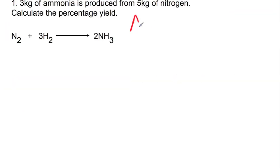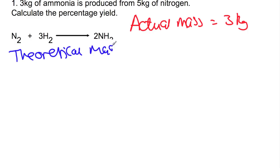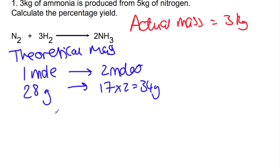In this first example, the actual mass of ammonia that is produced is 3 kilograms. We now need to look at the theoretical mass that should have been produced, had the reaction been 100% successful. We start with the mole ratio, so one mole of nitrogen should produce two moles of ammonia. This means that 28 grams of nitrogen would give you 17 times 2, 34 grams of ammonia. Equally, that means 28 kilograms would give you 34 kilograms of ammonia.